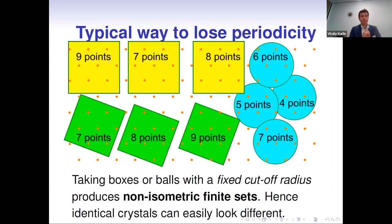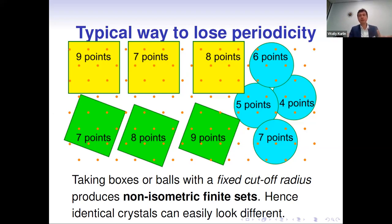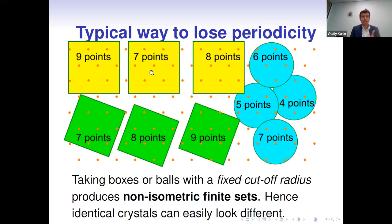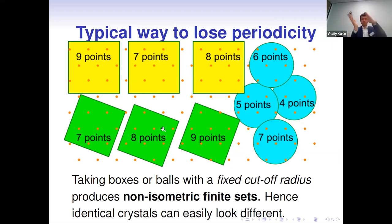Since our underlying structures are infinite and periodic, while computers prefer finite objects, it is tempting to take a finite subset. Unfortunately this doesn't work — you can take a box of the same size in different locations and get different numbers of points inside. Taking only a box and forgetting about the unit cell and basis, we see these boxes as different objects from the same underlying periodic structure.